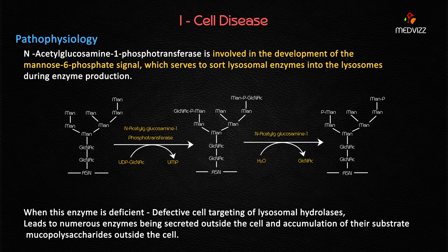When this enzyme is deficient, there is defective cell targeting for lysosomal hydrolysis because there is no sorting of the lysosomes. This leads to numerous enzymes being secreted out from the lysosomes into the cytoplasm, and accumulation of their substrate — mucopolysaccharides — outside the cell, because they cannot be broken down by the hydrolytic enzymes.